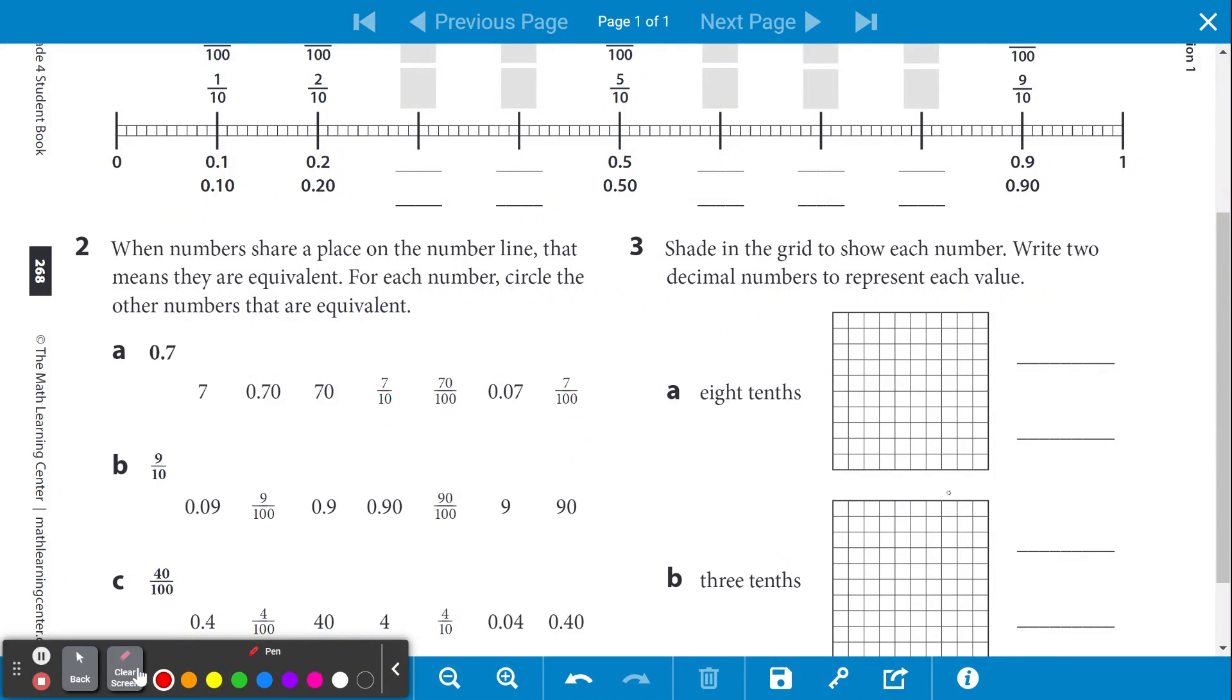In doing question number two, let's read it first. When numbers share a place on the number line, that means they are equivalent. For each number, circle the other numbers that are equivalent.